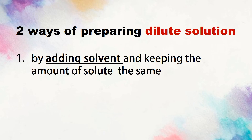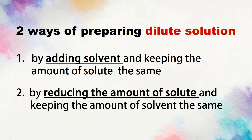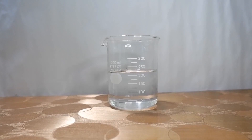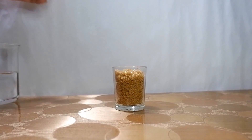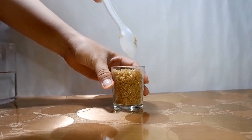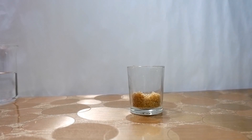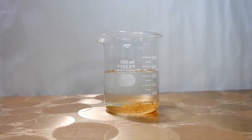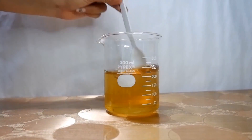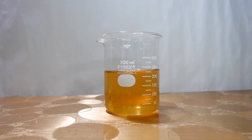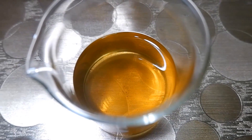The second way of preparing a dilute solution is by reducing the amount of solute and keeping the amount of solvent the same. For example, the actual volume of water is 230 ml and the actual amount of sugar is one full small glass. If you want to make a dilute solution, you reduce the amount of sugar and keep the amount of water the same. It now has less sugar and more water, and its color is light yellow.